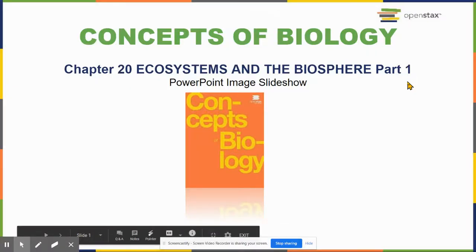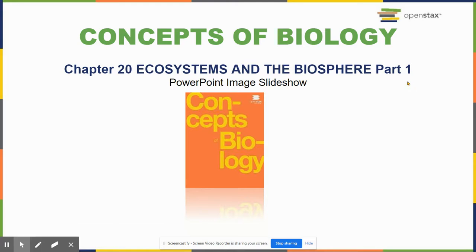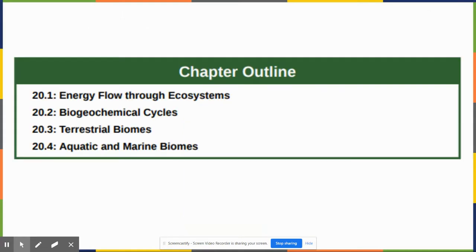This is the first lecture on Chapter 20, Ecosystems and the Biosphere, Part One. We're going to cover three things: energy flow through ecosystems, biogeochemical cycles, and biomes — though I won't spend a lot of time on biomes.